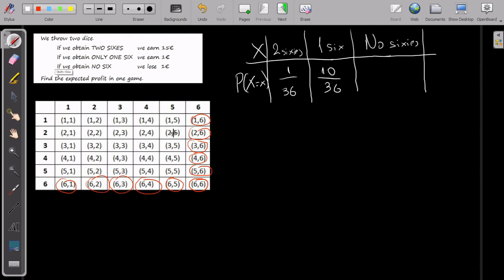And no sixes, obviously, out of the thirty-six, it will be all the probabilities without bringing sixes, which is thirty-six minus eleven, twenty-five over thirty-six.